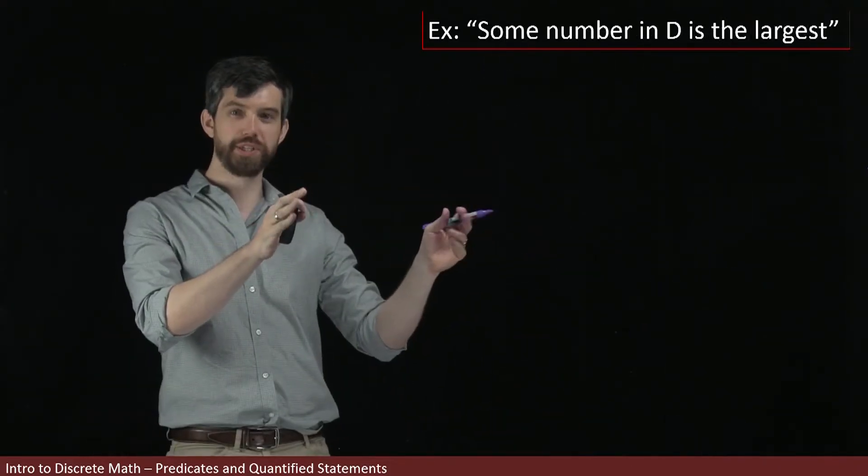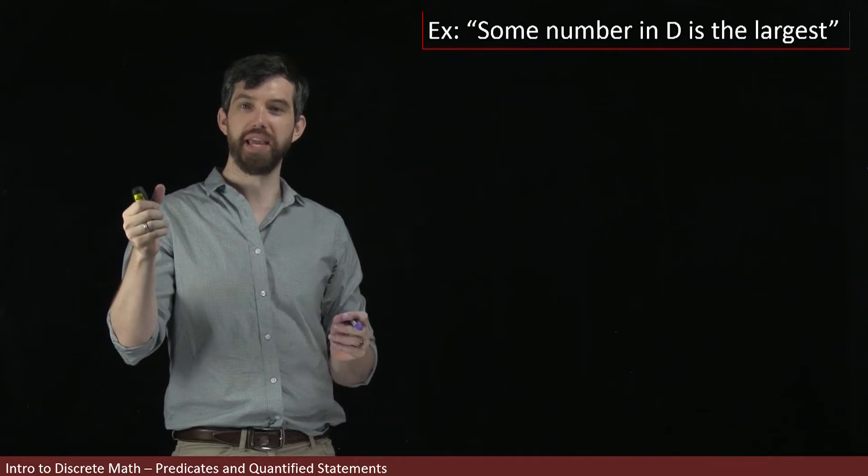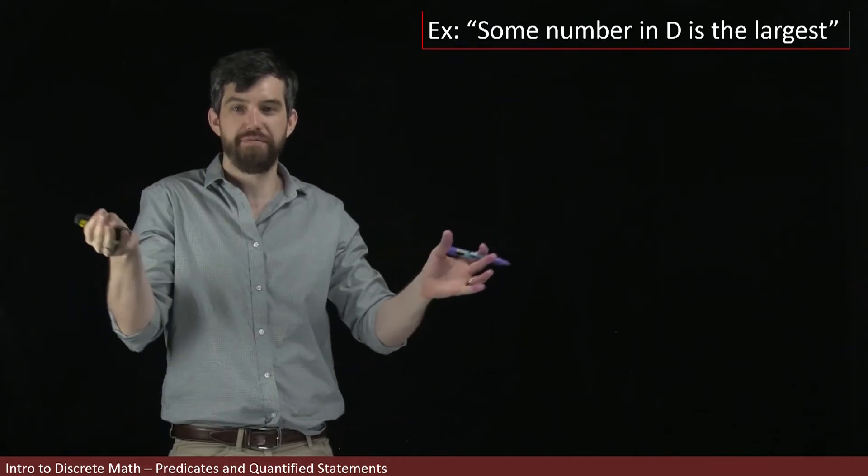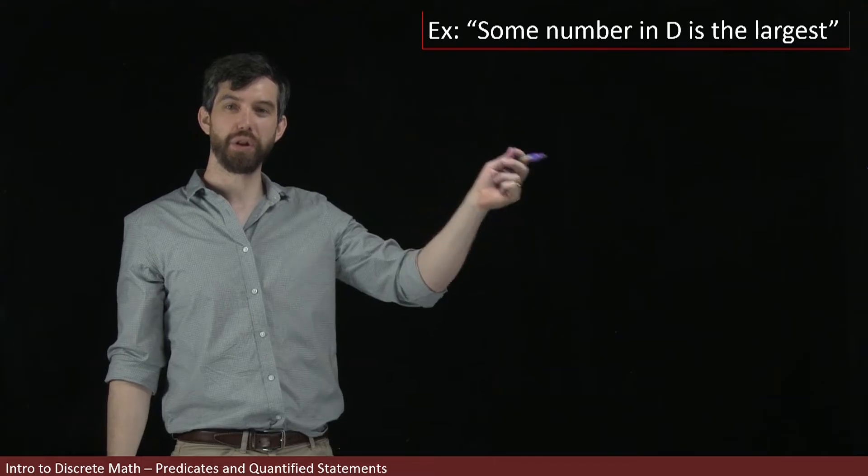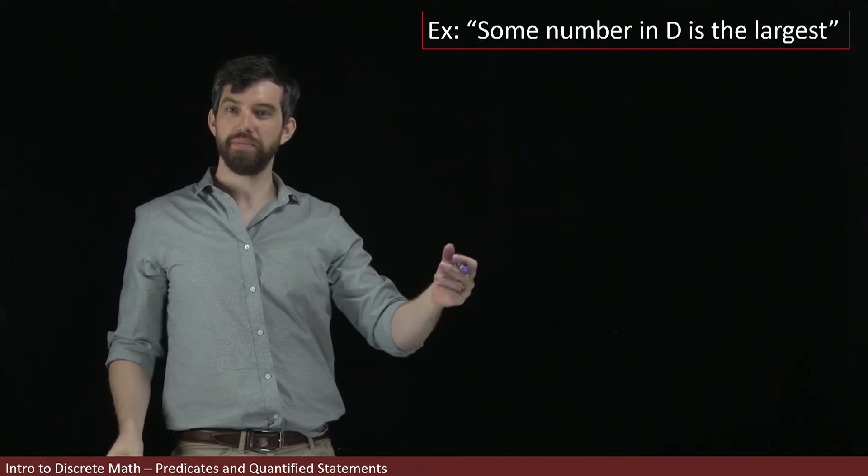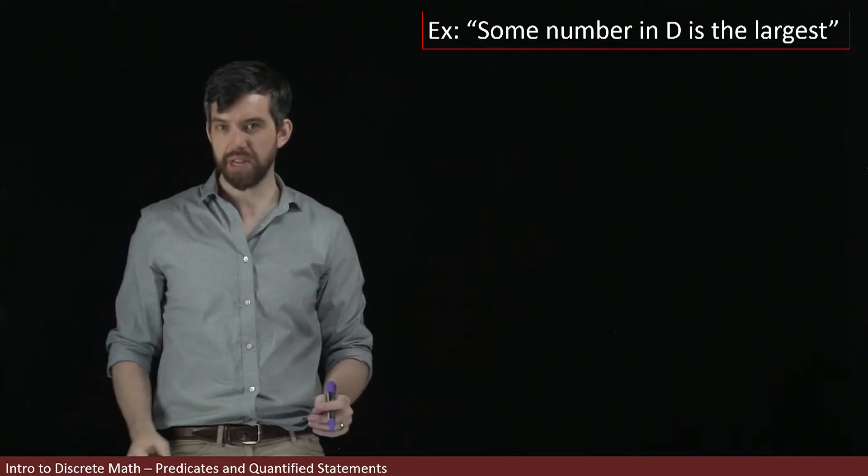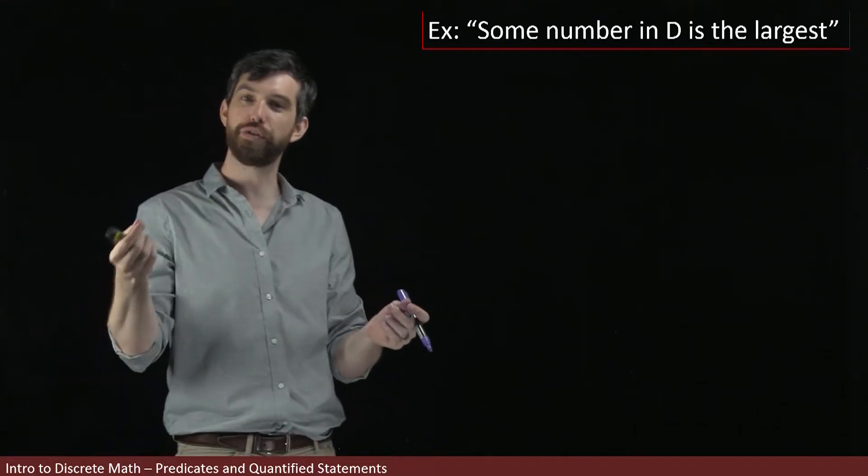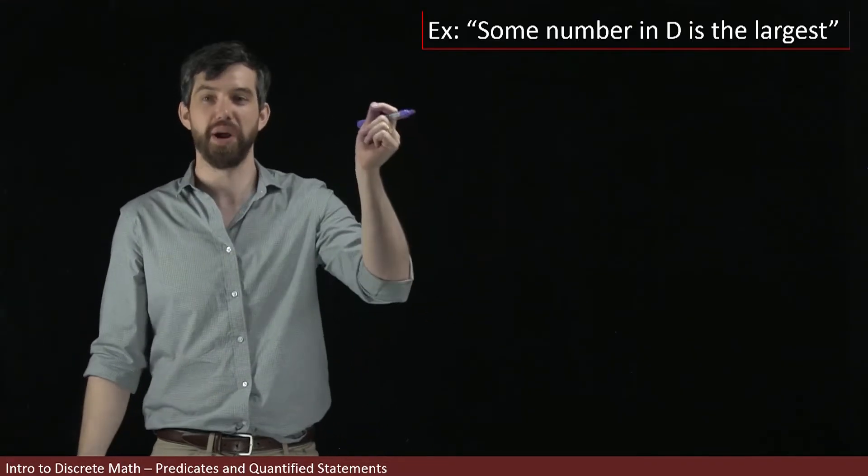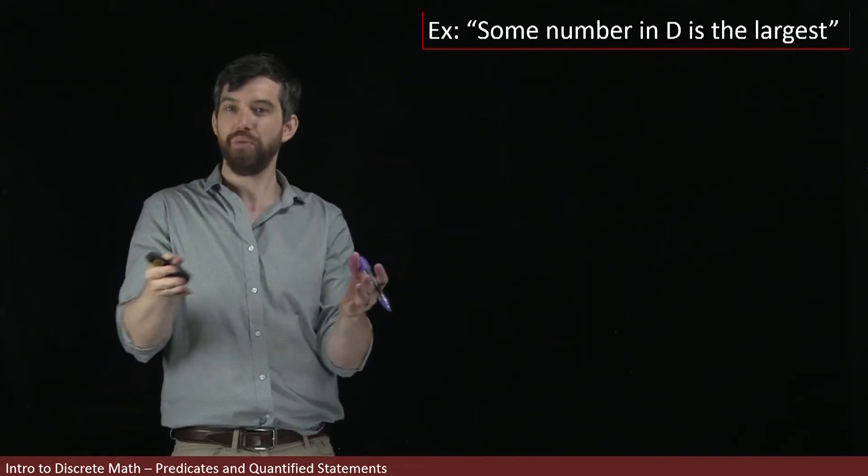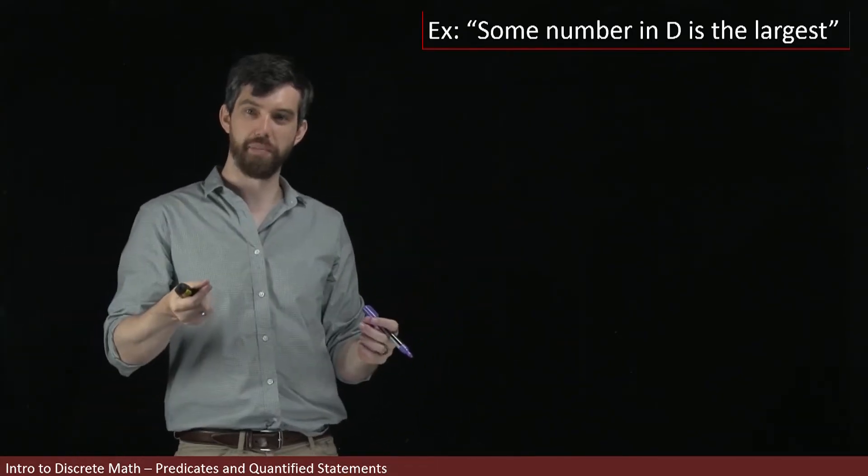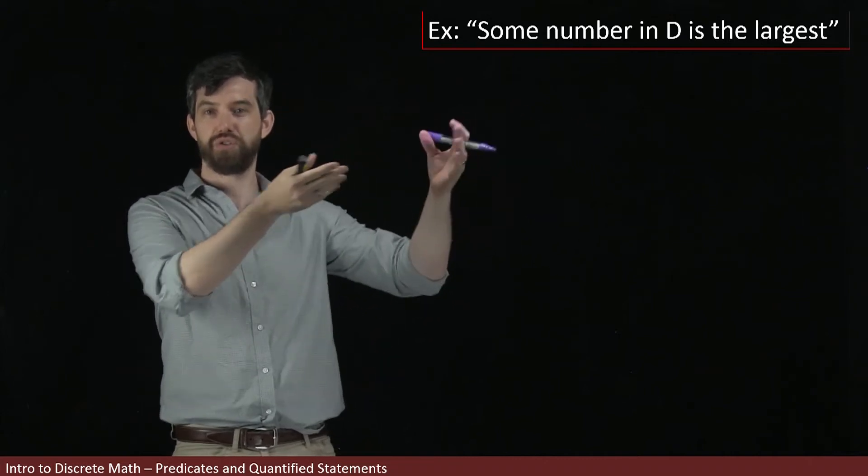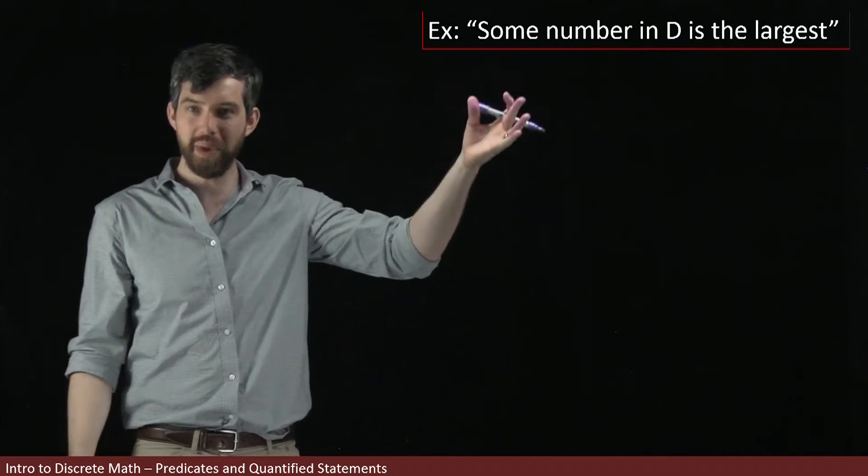In this statement, we're saying some number in some domain that I have not specified here is going to be the largest. Now, the truth or falseness of this claim does depend on what the domain was. Like if the domain is a finite set like one, two, three, then the largest number is three. If the domain was the positive integers, there is no largest number.